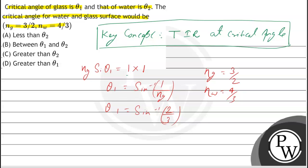Similarly, we can write theta_2 = sin⁻¹(3/4) by a similar process and similar calculation. So theta_2 is the critical angle of the water-air interface.